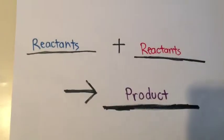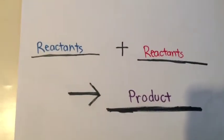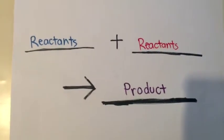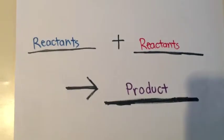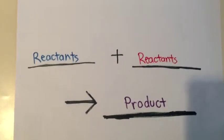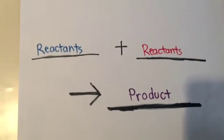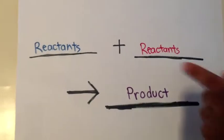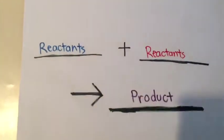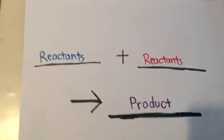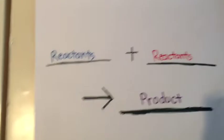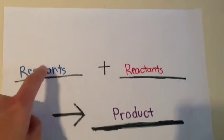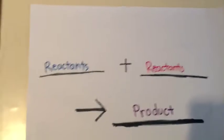When you're writing the chemical formula, you write the first element or compound, then a plus sign, then the element or compound. These elements or compounds are called reactants. Instead of having an equal sign, scientists use an arrow, which is called yields.